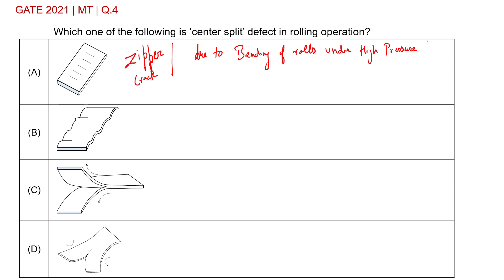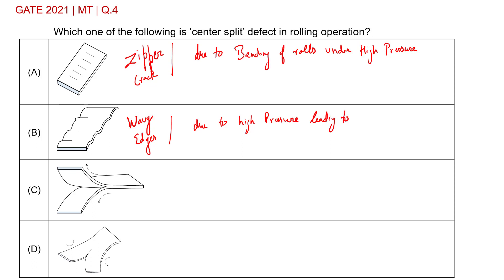Option B: this kind of defect is known as wavy edges. This defect is also caused due to the same bending of rolls due to high pressure.